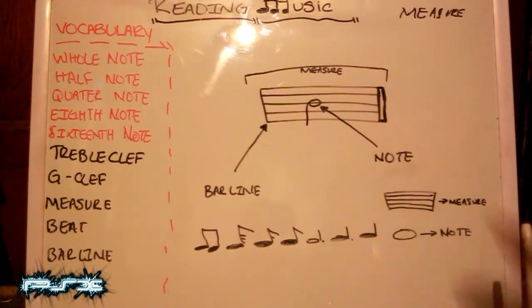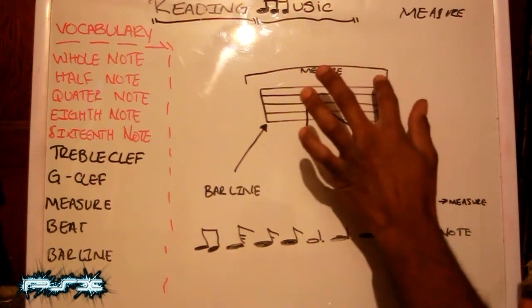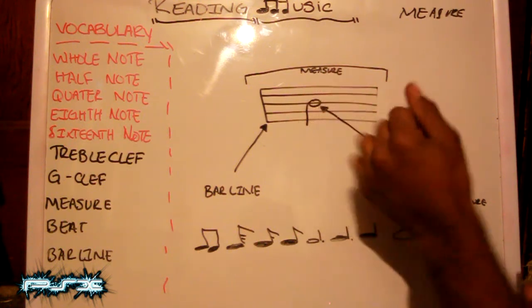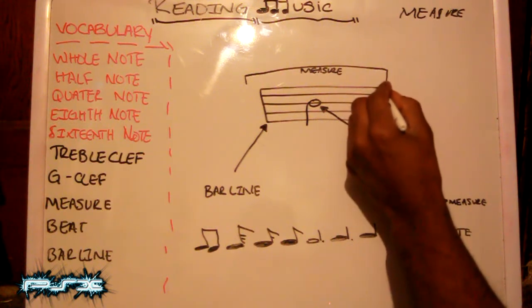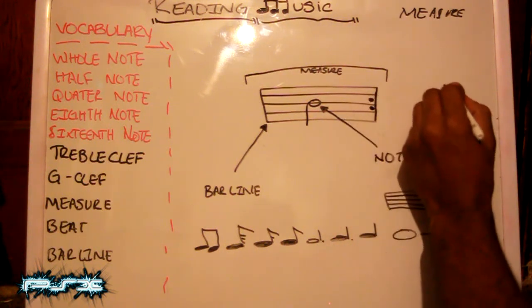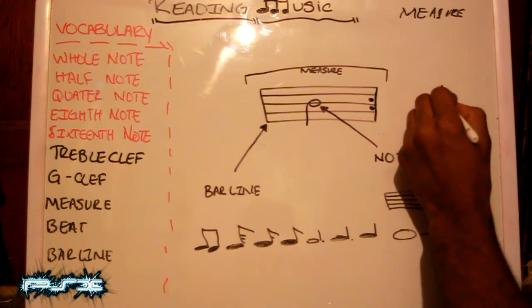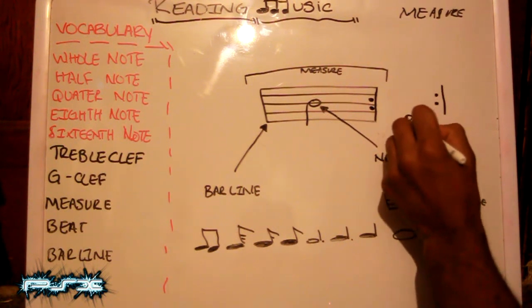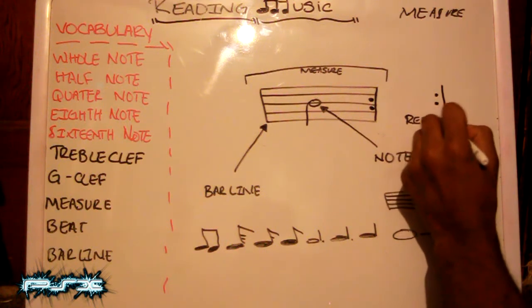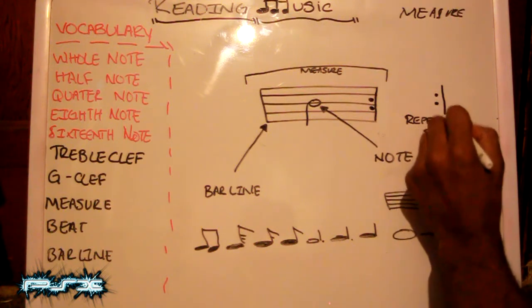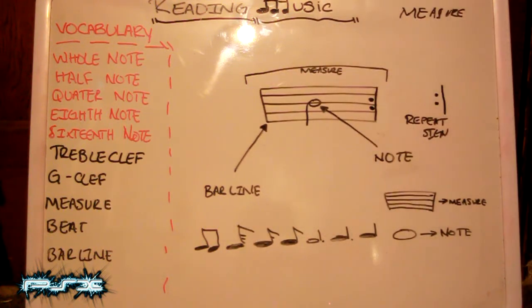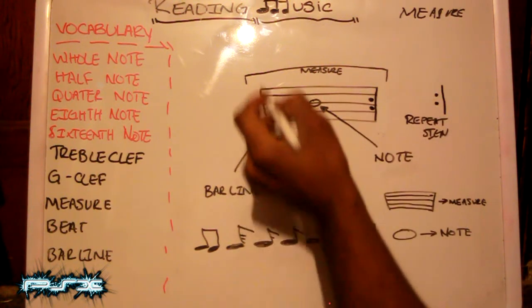That's pretty much it on the basics of a measure. Now if we were to move on — instead of it being a double bar line, sometimes you'll see this. It's called a repeat sign. A repeat sign basically tells you to go back to the beginning of either the phrase, which could be more than one measure, or the measure.